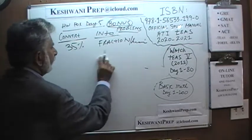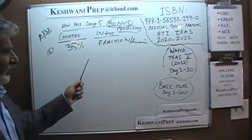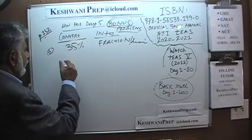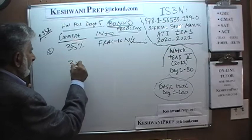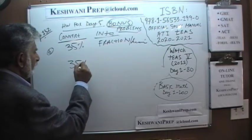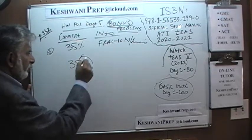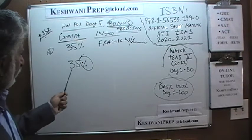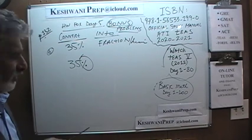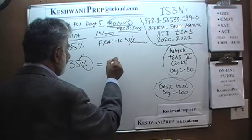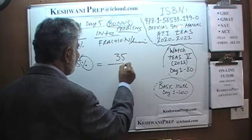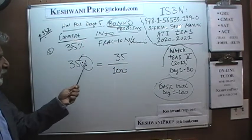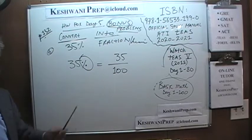We are going to convert 35% into fraction and decimal. What does the word percent mean? Percent means out of 100 — we have talked about it many, many times. So how do we write 35% as a fraction? It is simply 35 out of 100. That is what percent means. We can leave it like this, depending on how the answer is presented on the exam.